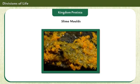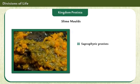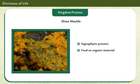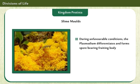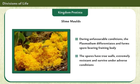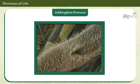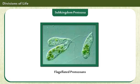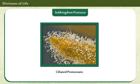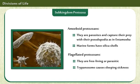Slime molds are classified under Kingdom Protista. They are saprophytic protists that feed on organic material. Under suitable conditions, they form an aggregation called plasmodium. Sub-Kingdom Protozoa are classified as amoeboid protozoans, flagellated protozoans, ciliated protozoans, and sporozoans. Some of their features are displayed on the screen.